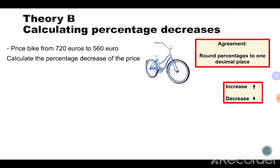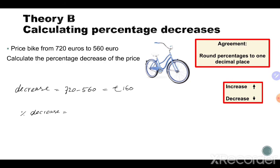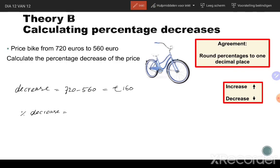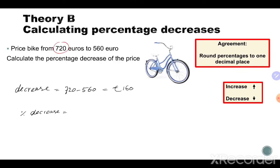So we need to calculate the percentage decrease of the price. That is 720 minus 560, which is 160 euros. So the discount is 160 euros. The question is: what is the percentage decrease of the old price? Again, what is the old price? The 720 — that's the price where we start with, because it goes to the new price of 560.